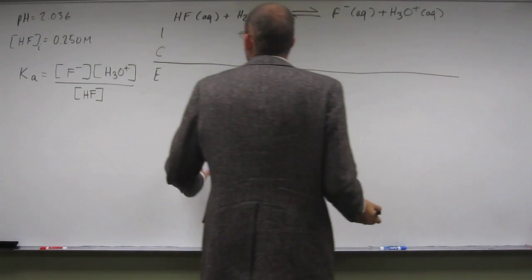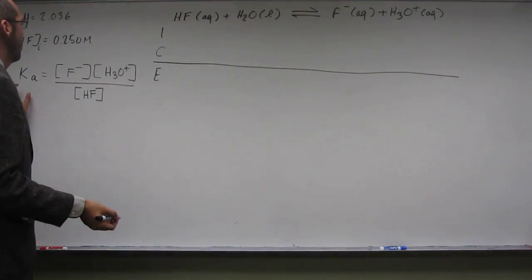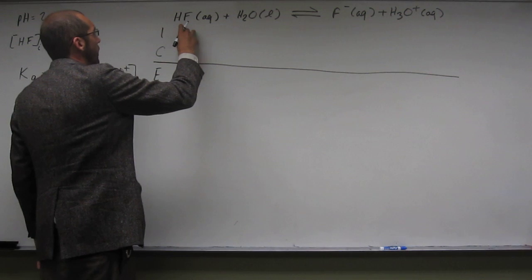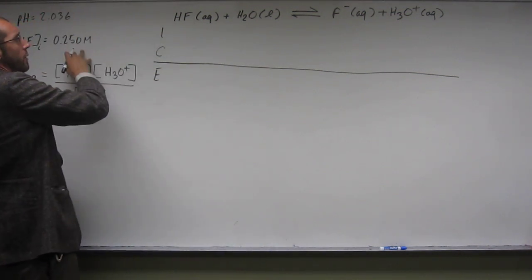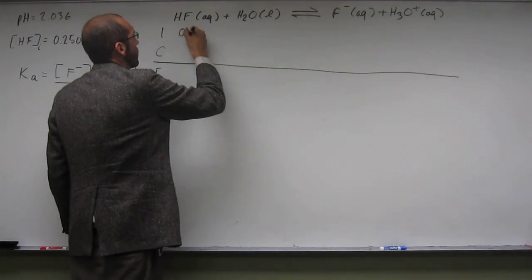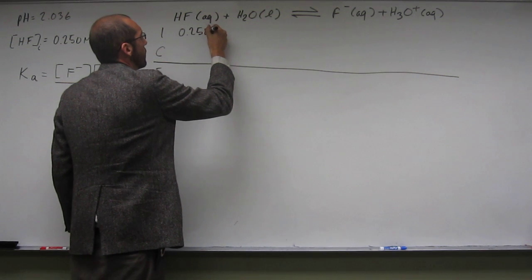And from this we can get the value of Ka. Okay? So the initial concentration of HF is presented to us in the problem at 0.250 molar.